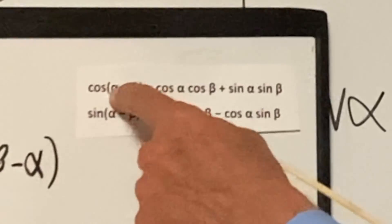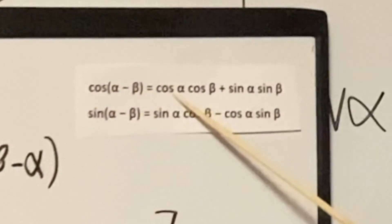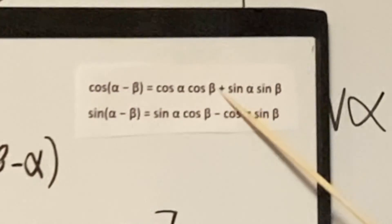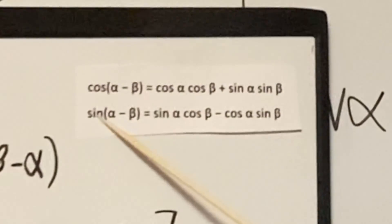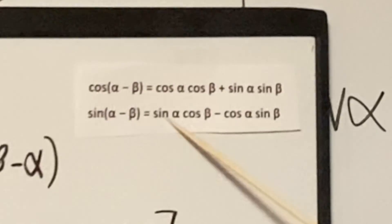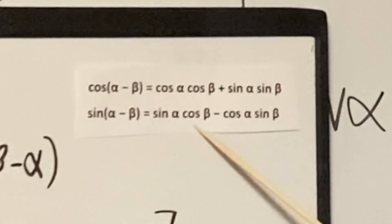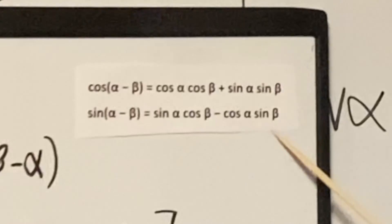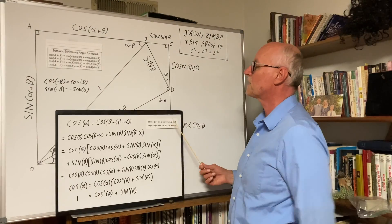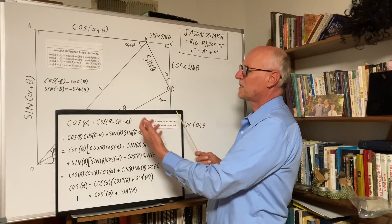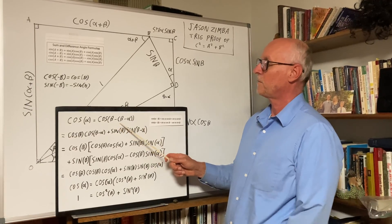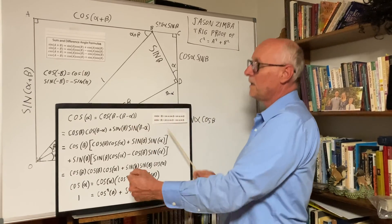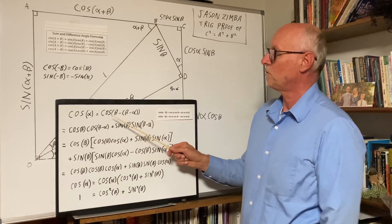Cosine(alpha minus beta) equals cosine alpha cosine beta plus sine alpha sine beta, and similarly sine(alpha minus beta) equals sine alpha cosine beta minus cosine alpha sine beta. What we do is a simple plug-and-play substitution — you've got the first argument, the second argument, and so that's what we do.